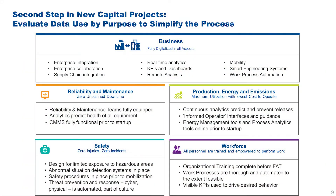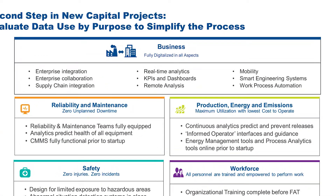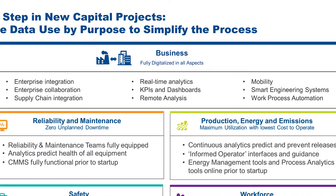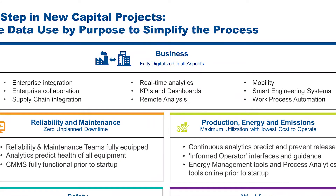The first grouping is around business systems — enterprise integration, supply chain integration, and real-time analytics. What type of KPIs do you want to have and how visible do you want to make them? Where does the data come from — is it from a business system or from someplace else?